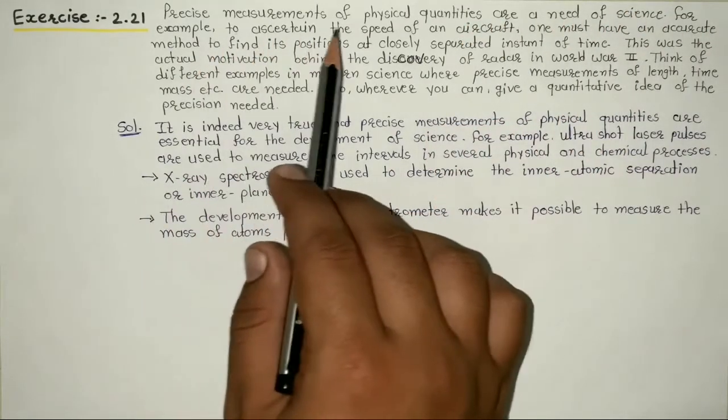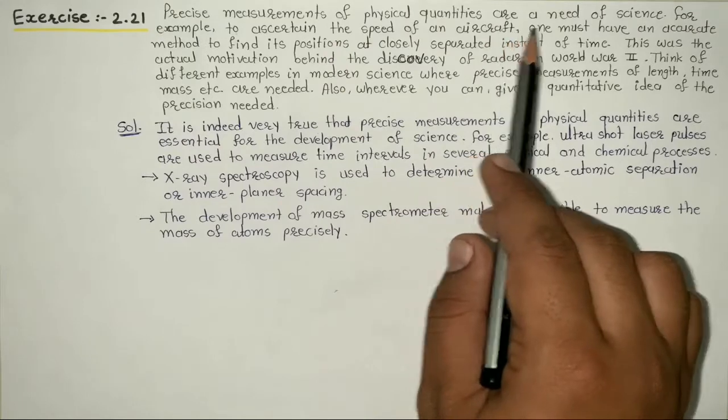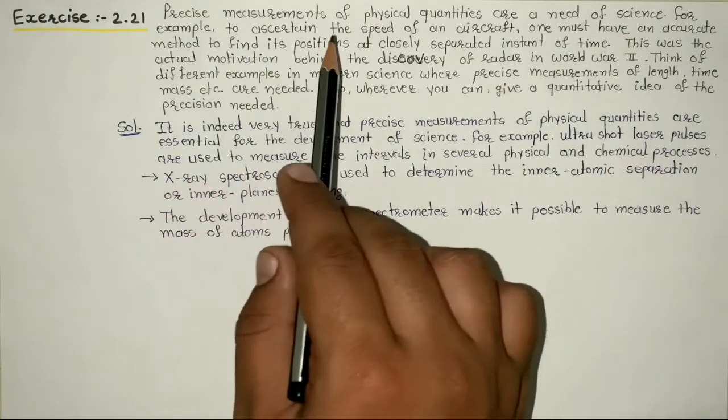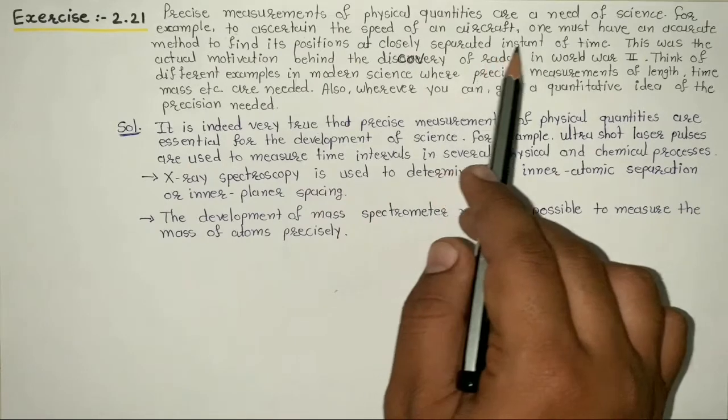For example, to ascertain the speed of an aircraft, one must have an accurate method to find its position at closely separated instants of time.